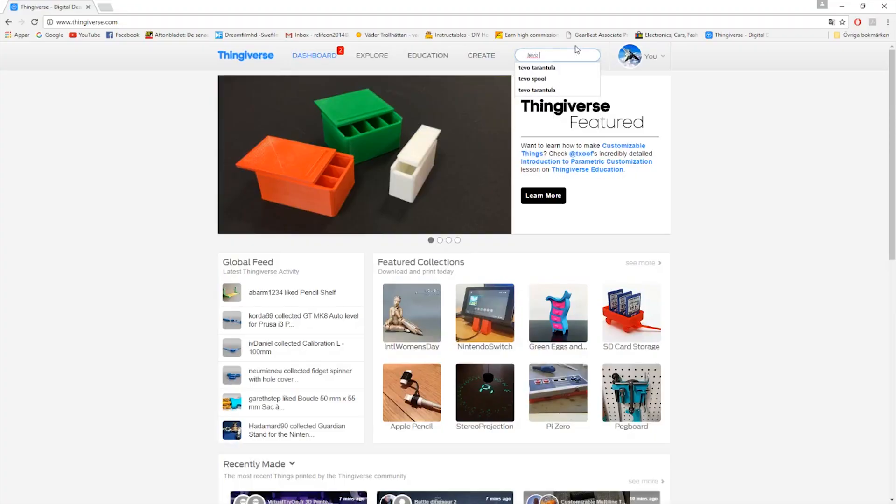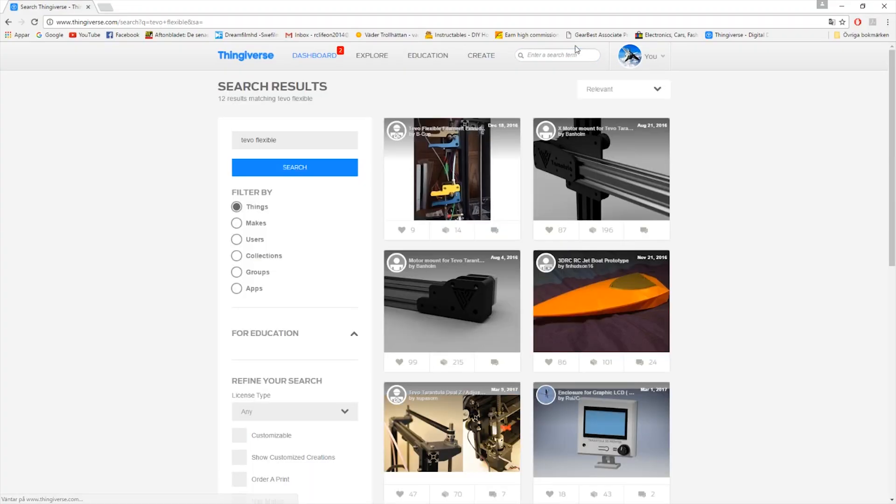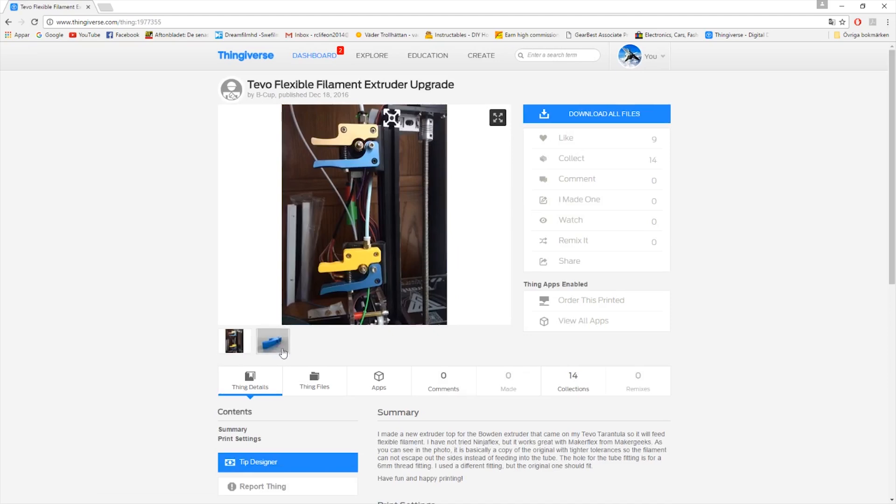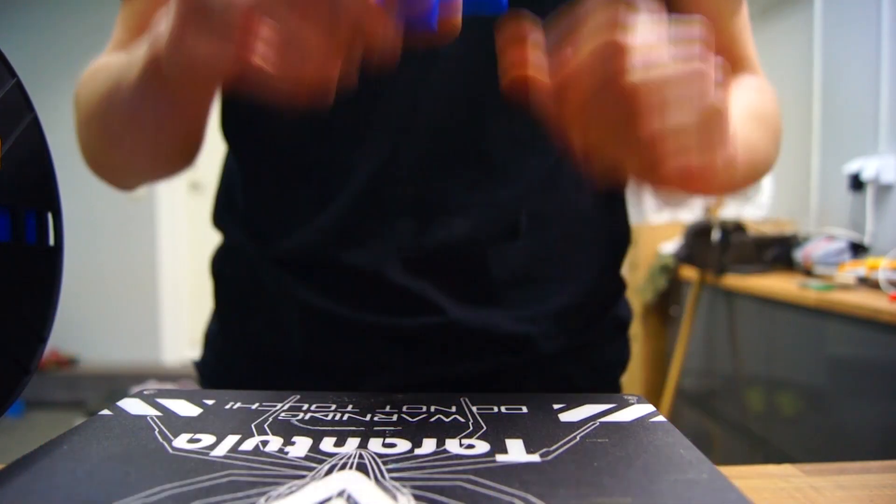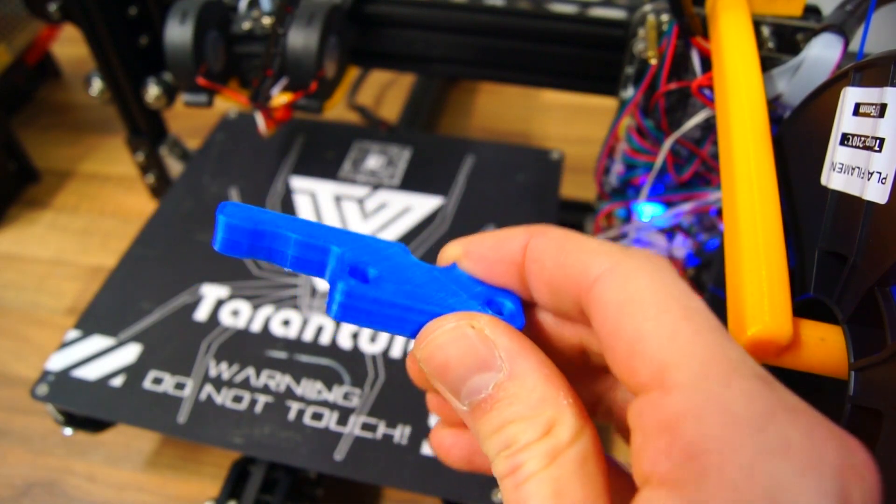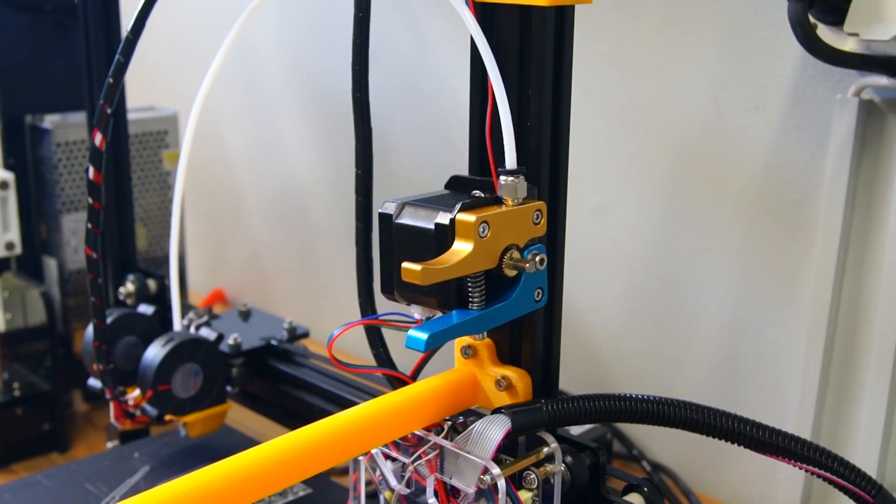This is a very common problem that has been addressed already. I was able to find an extruder clamp with tighter tolerances on Thingiverse. This quick and cheap modification ended up working beautifully, so now even the Tarantula can print with the flexible filaments.